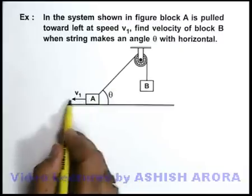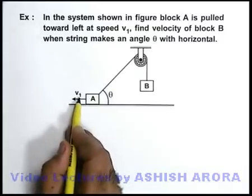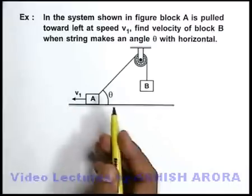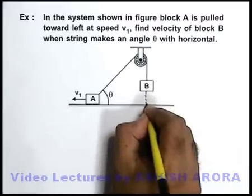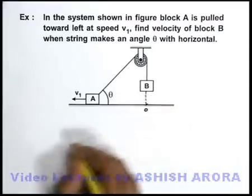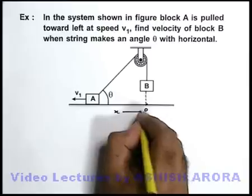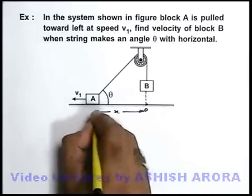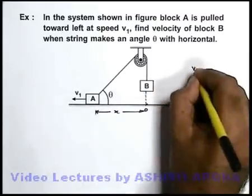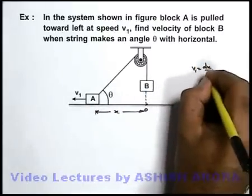Now as block A is moving toward left with v1, we consider its displacement from a reference point which is vertically below B. Say this point is O. Let us consider this distance is x. So we can directly write v1 is equal to dx/dt.